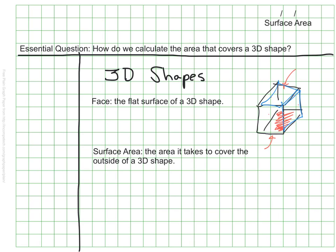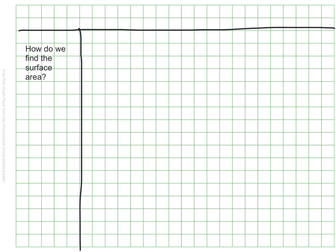We can find the surface area by breaking the 3D shape into pieces. By doing that, we can find the area of each face one by one. I'll show you what we mean by using this rectangular prism that I have drawn.